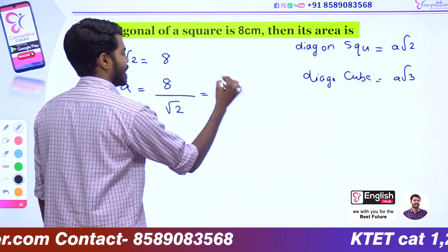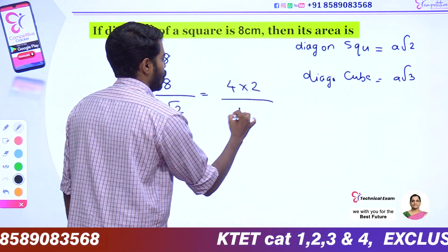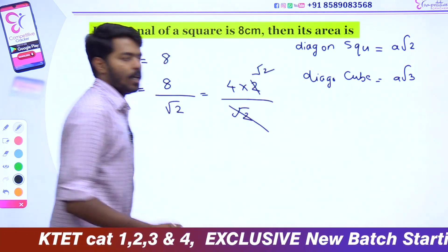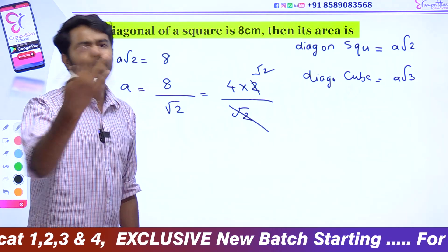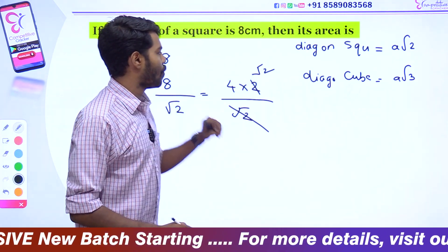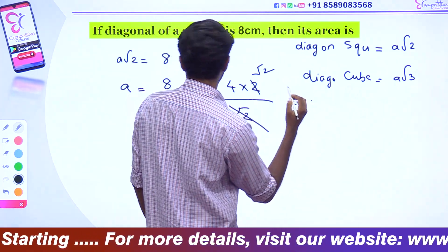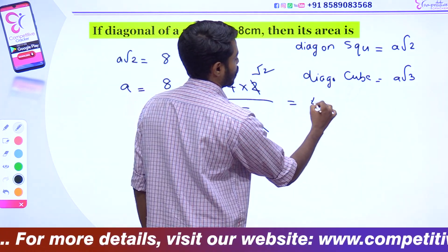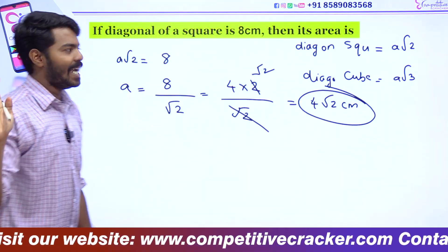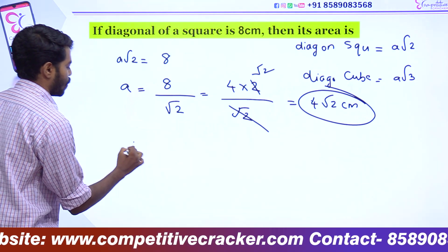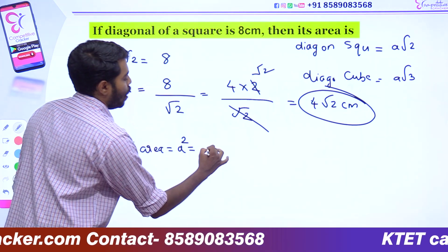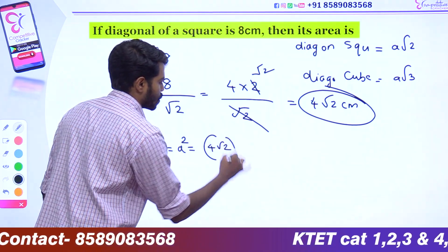We can split this as 8 divided by √2, multiplied by √2 over √2. Taking √2 into √2 gives 2. So the length of one side of the square is equal to 4√2 cm. Therefore the area is simply side times side — that is (4√2)² = 32 cm².